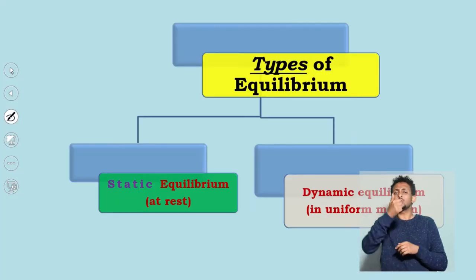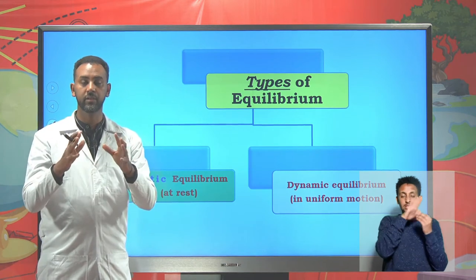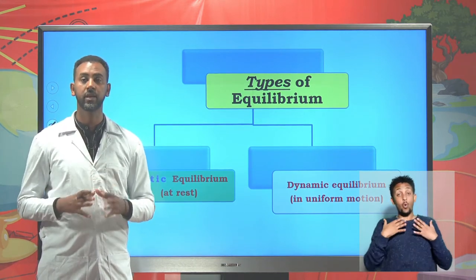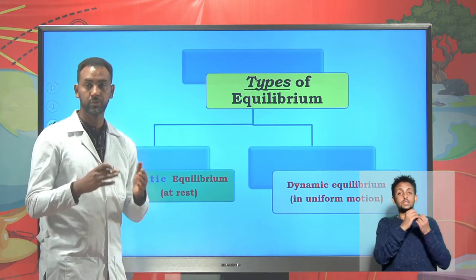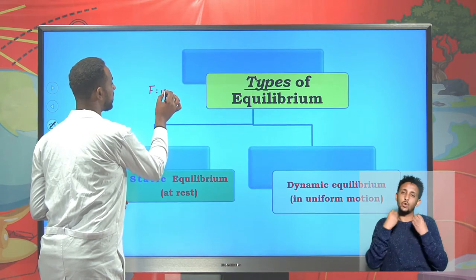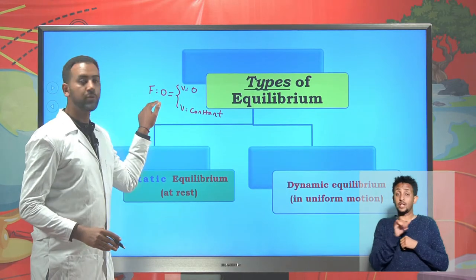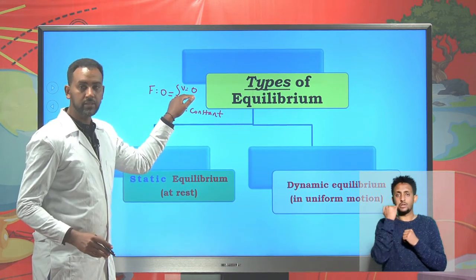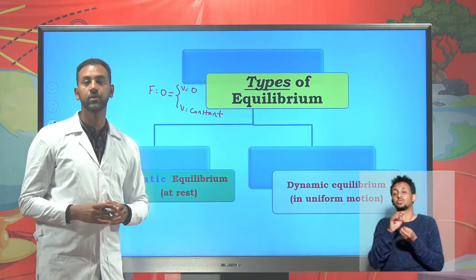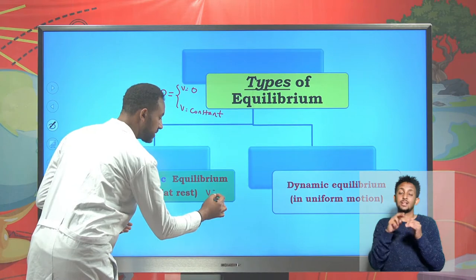There are basically two types of equilibrium: static equilibrium and dynamic equilibrium. Static equilibrium is equilibrium exerted on a given stationary body, where the net force on that object is zero. As you learned in Unit 4, the net force on a given object is zero if, and only if, the object is at rest or the object is in a state of motion with constant velocity. Static equilibrium emphasizes only objects at rest, meaning the object has zero velocity.